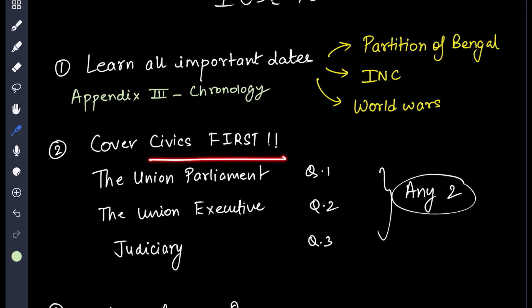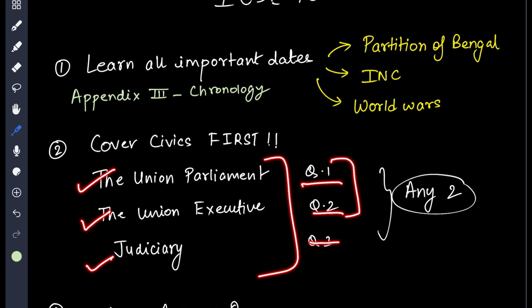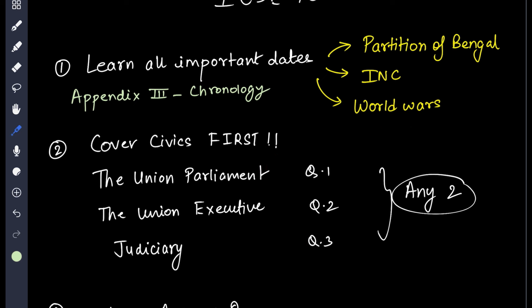Cover civics first. Civics is very scoring. In civics you have long answer questions, and you can attempt any two questions from Union Parliament, Union Executive, and Judiciary. You can do good chapters and cover full questions. Because in short answers, any one of those questions may be asked — maybe MCQ — which we will talk about.